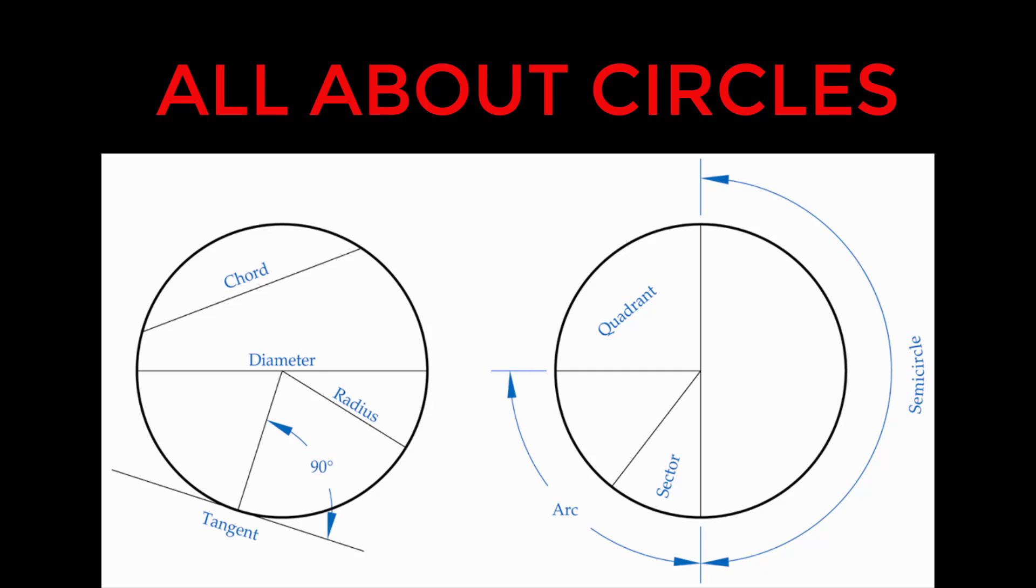It's important that the diameter go through the center point or else you'll have something called a chord. A chord is a line that goes through a circle but does not contact the center point. This does not give you the true size of the circle.